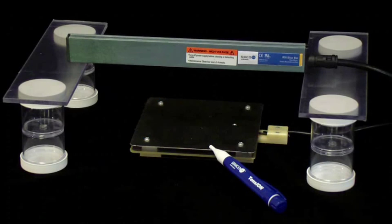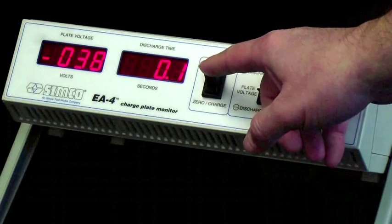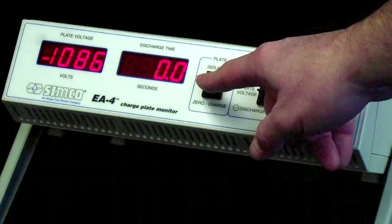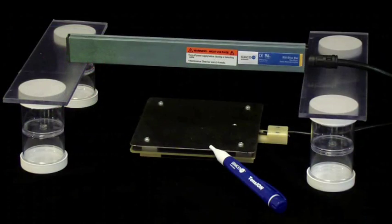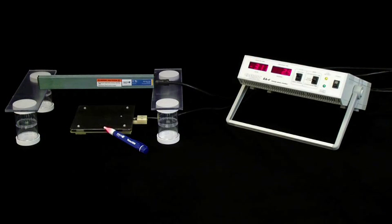In this case, we show a static bar being used to neutralize a charged CPM, and we will note the response of the voltage detector. The CPM is charged up to 1000 volts, as you can see by the display. The static bar is placed over top of the CPM and powered on.